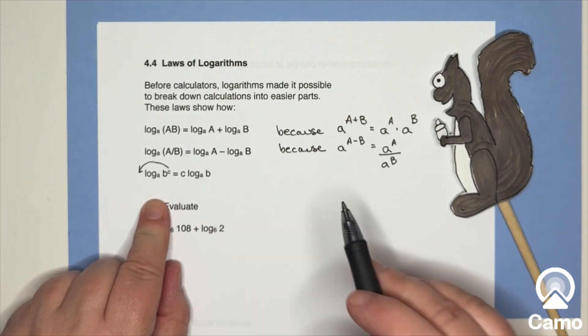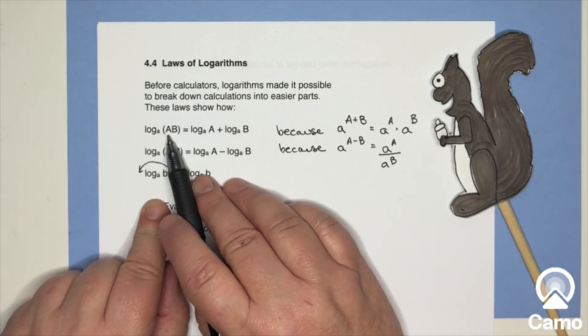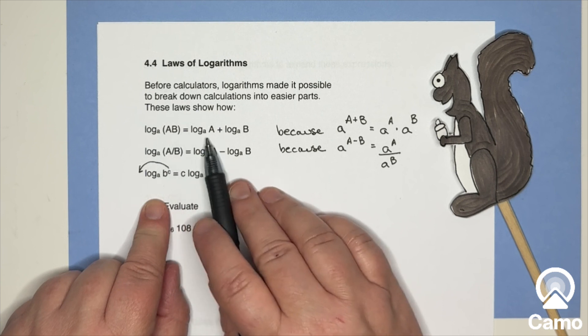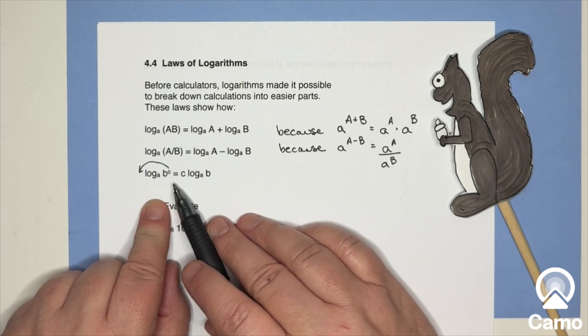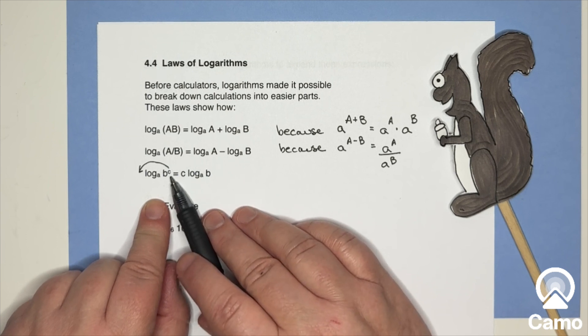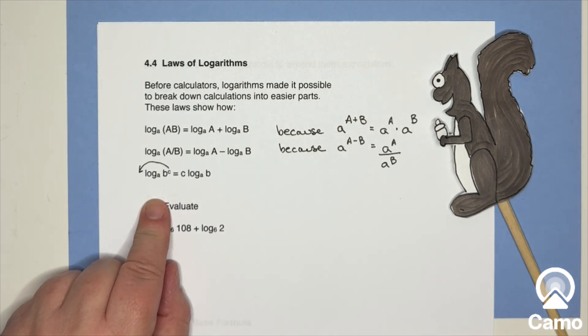It's b times b times b times b, etc. And since the logarithm of a product is the sum of those logarithms, you've just got a bunch of log of b. How many do you have? You have c of them. So the c comes down in front.